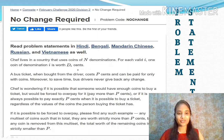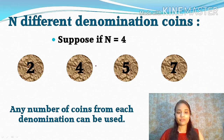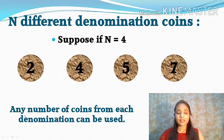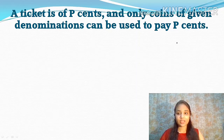It says that Chef lives in a country that uses coins of N denominations, and for each valid I, one coin of denomination I is worth D-I cents. There are N different denomination coins — like a 2 cent coin, 4 cent coin, 5 cent coin, 7 cent coin. Also, we can use any number of coins as we want — there is no restriction on the number of coins of each denomination. Now, there is a bus driver and we have to pay P cents for the ticket. Only these coins can be used to pay the bus driver.